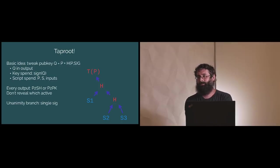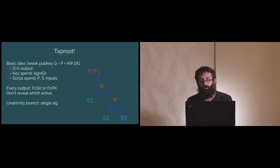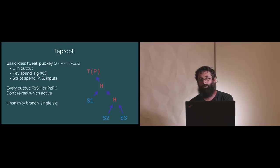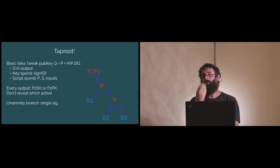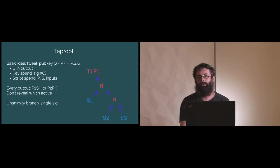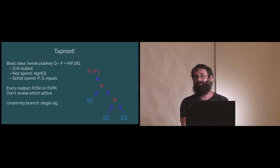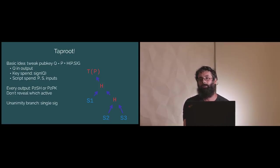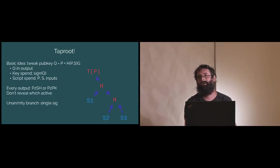The awesome part is what goes on chain in case of a spend through the key path is just a signature. You don't reveal what the script was. You don't even reveal there was a script in the first place. So this turns the unanimity branch — which we assume exists in every contract — into just a single signature. Now not only do all outputs look identical; generally all collaborative-case inputs are also identical. This is an enormous win for privacy.